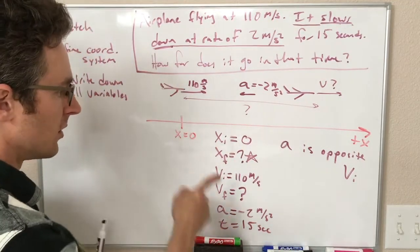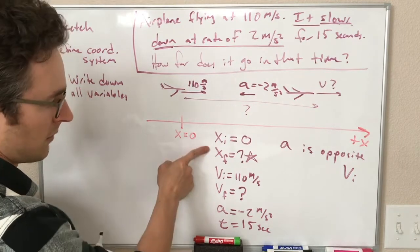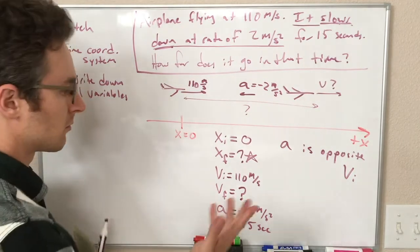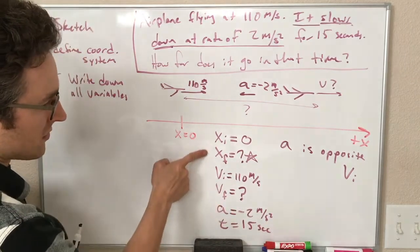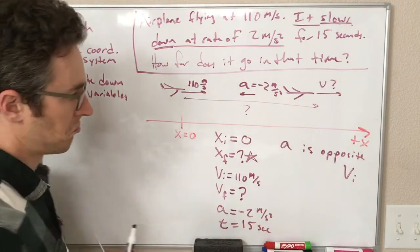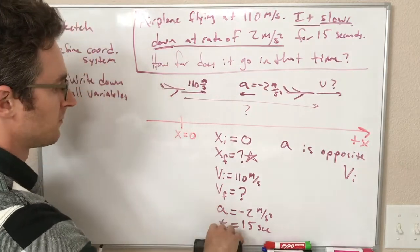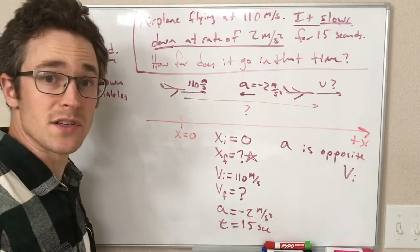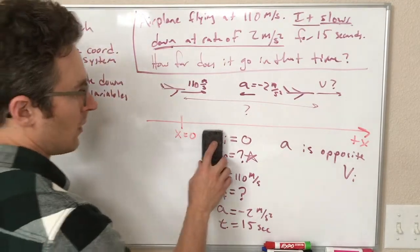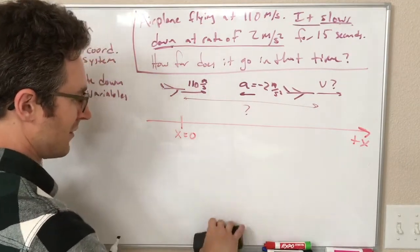So this is good. We want X final. We know everything except for X final and V final, and we don't really care about V final. So if we had an equation with this, this, this, this, and this, that would be great, because then there's one unknown and we can solve for that. If you look at your equation sheet, it turns out there is exactly such an equation.